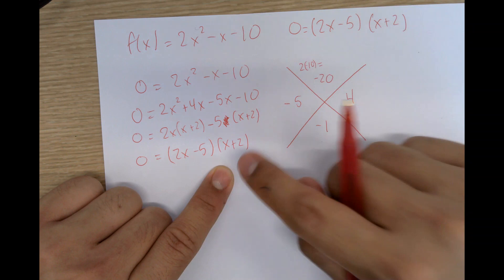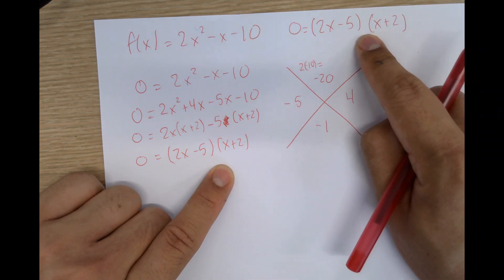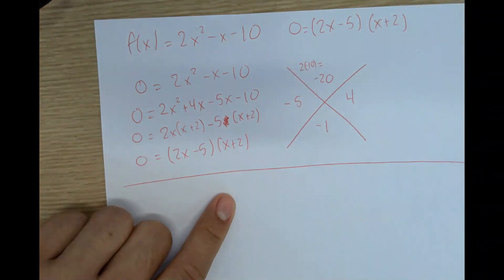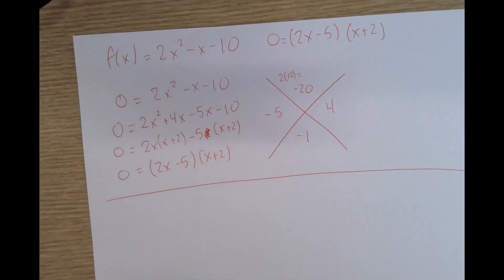So you can see by solving it, the second method, we get the same factors. Okay, so that's it for method 2. We would go ahead and solve this. We would solve for the zeros, and then we would get our answer. Good job.